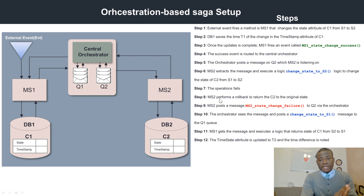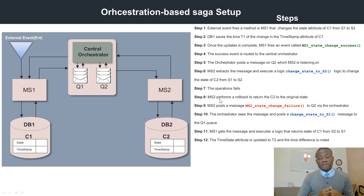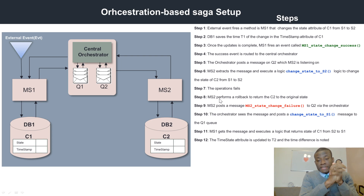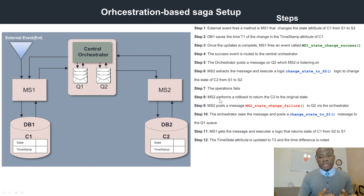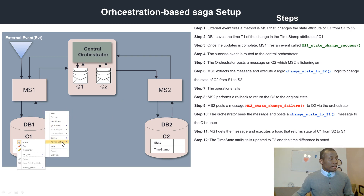The first thing that ever happens in a Saga is that an external event triggers the Saga — this may be a form filled somewhere through the browser or something that triggers the server in the order service (MS1). DB1, the database in MS1, saves the timestamp T1 when this event is triggered, because we are trying to calculate the time between when the Saga starts and when it stops, so we can measure response time.